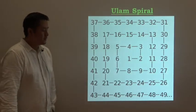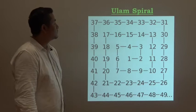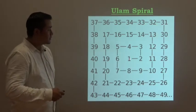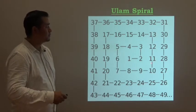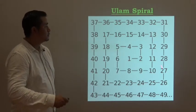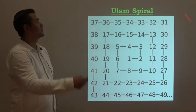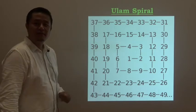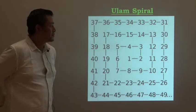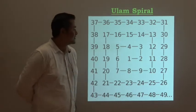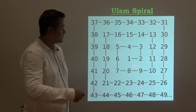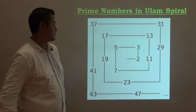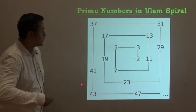Another thing is called Ulam spiral - natural numbers written in the form of a square spiral. Looking at this, prime numbers are located along diagonals in the Ulam spiral.